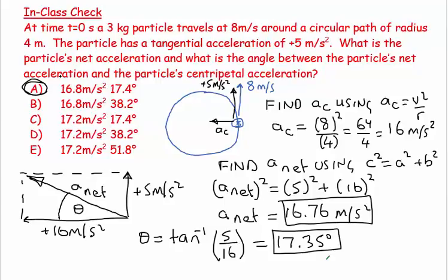To summarize: you have to understand the terminology about net acceleration, visualize the problem, and recognize that acceleration has two components — centripetal and tangential. Then use Pythagoras to combine them for the net acceleration, and use inverse tangent to find the angle.